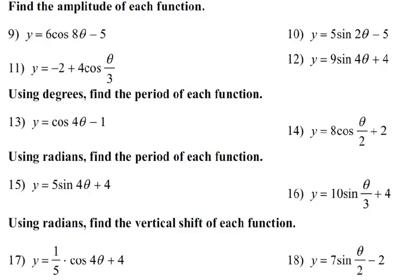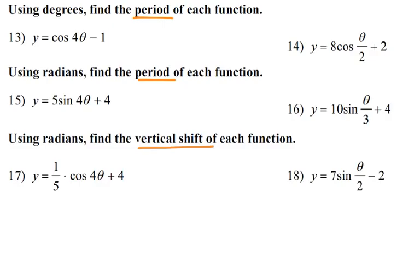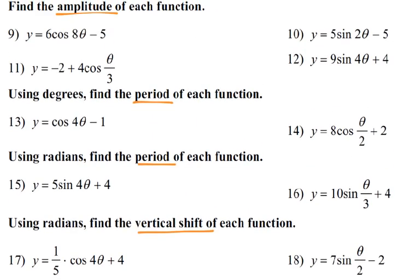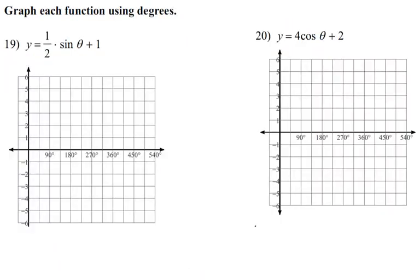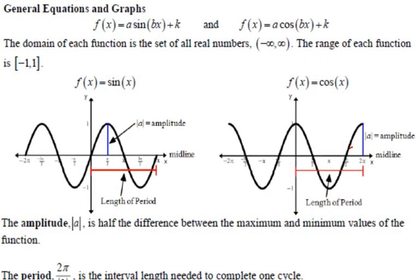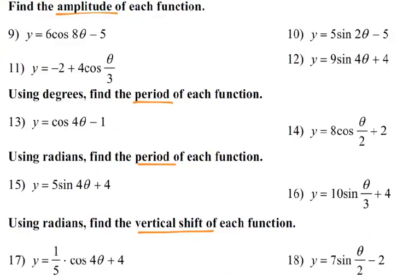Now we're looking at trig graphing — but first, just identifying amplitude, period, and vertical shift. For amplitude, whether it's sine or cosine, the amplitude is simply the number multiplied in front. Number 9: 6 times cosine — amplitude is 6. Negative 2 plus 4 times cosine — amplitude is 4. 5 times sine — amplitude is 5. 9 times sine — amplitude is 9.